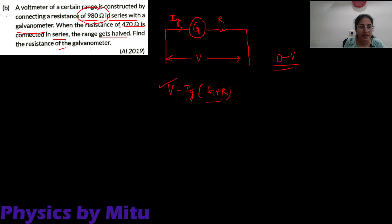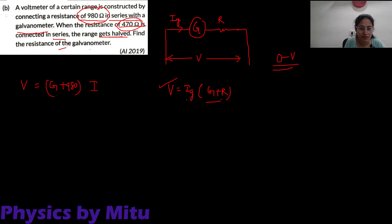When 980 ohm is connected, our range is some value V. And if 470 ohm is connected, the range gets halved. So our equation for the first case: when 980 ohm is connected in series, (G + 980) into IG is equal to V.